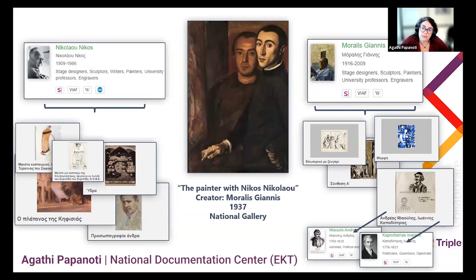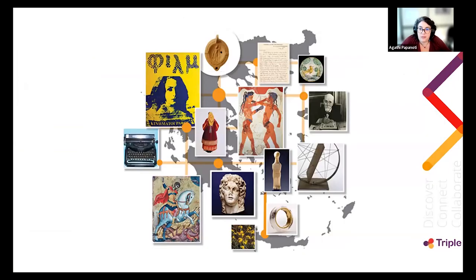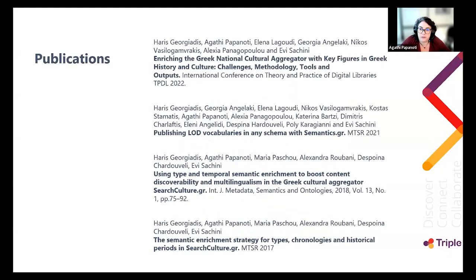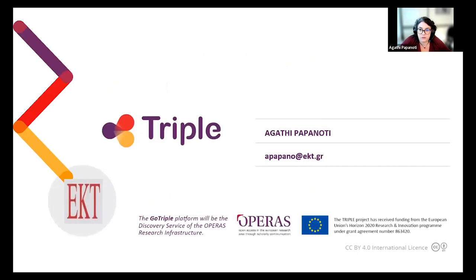The use of linked open data elevates a personal name from a simple label, gives it context, helps educate our users, and creates valuable connections in our content. And since five different types of enrichments are not enough, we are currently working on enriching the spatial metadata of our content using GeoNames. This will allow us to develop search, browsing, and presentation functionalities on interactive maps. Here is a list of publications regarding our enrichment strategy and the use of linked open data vocabularies — you can find them in the publications page of searchculture.gr. Thank you very much.